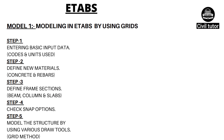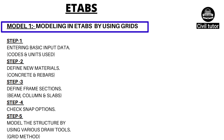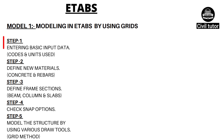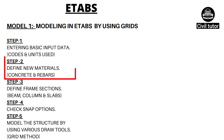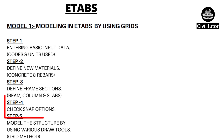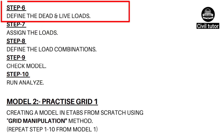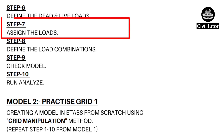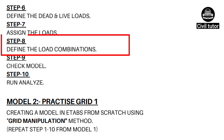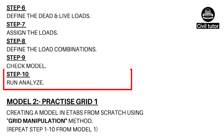Talking about the content provided in ETABS, as I already mentioned, you will get to work on six separate models. The first one will be modeling in ETABS using grids, done in 10 steps. Step 1: enter the basic input data — codes and units used. Step 2: define material properties. Step 3: define section properties. Step 4: check snap options. Step 5: model the structure using various draw tools. Step 6: define dead and live loads. Step 7: assign the loads. Step 8: define load combinations. Step 9: check the model. Step 10: run the analysis.